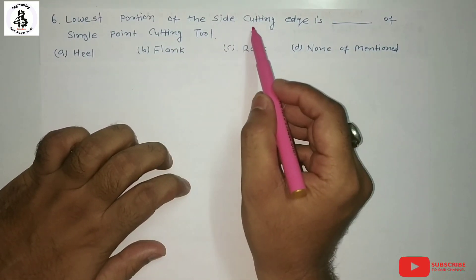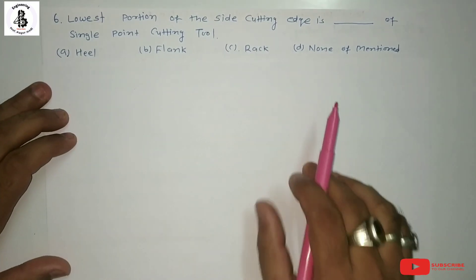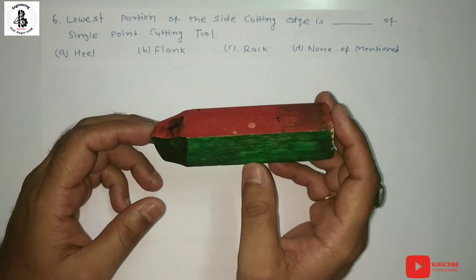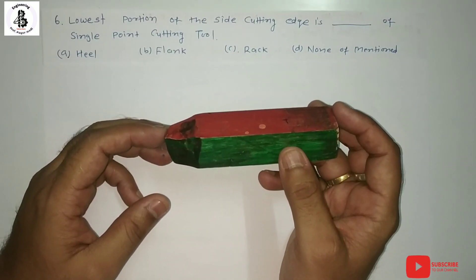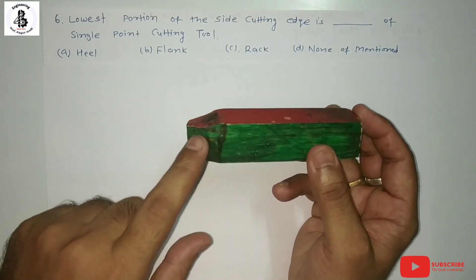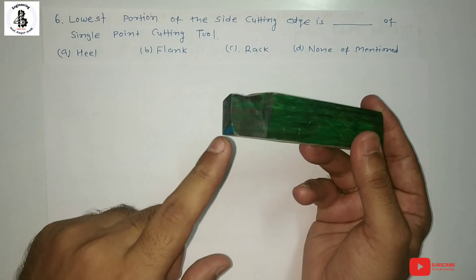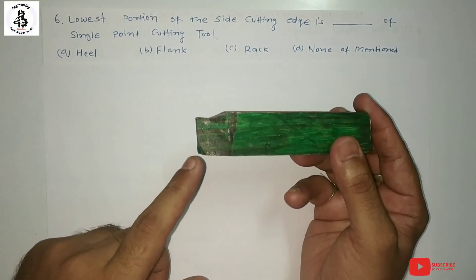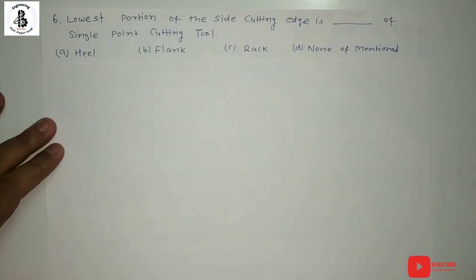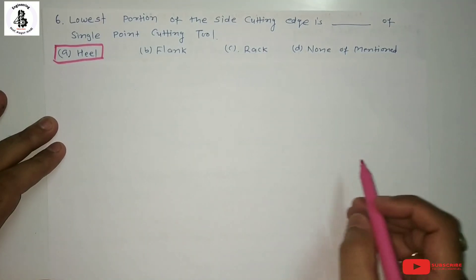Question 6: the lowest portion of the side cutting edge is blank of a single point cutting tool. Looking at the single point cutting tool diagram, we can identify the face, the flank, and the heel. The heel is the lowest portion of the side cutting edge for a single point cutting tool. So the answer is A, heel.